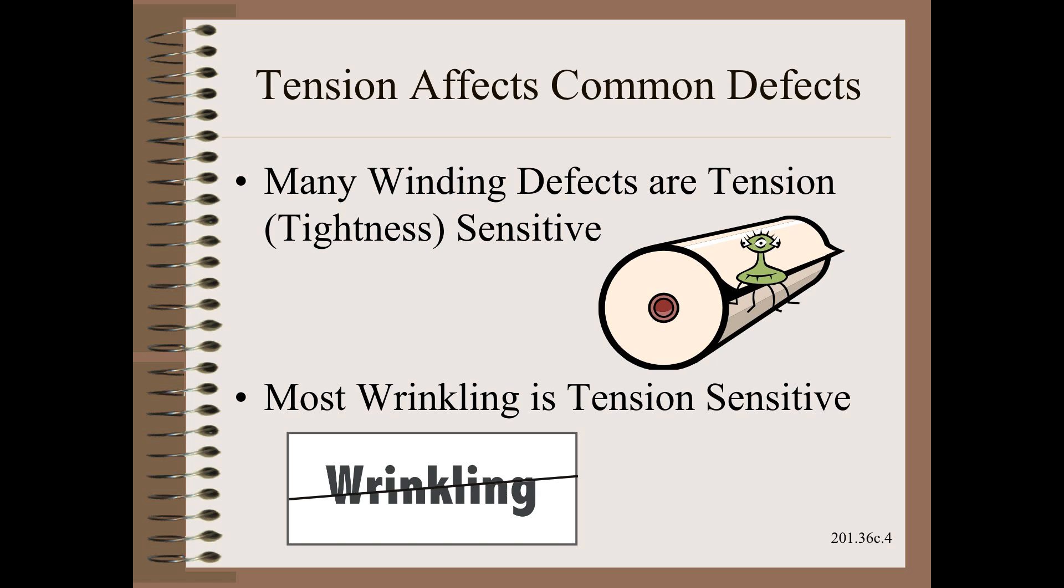Winding and wrinkling defects are so common as to be easily the largest areas of waste, delay, and customer complaints in the web industries. While only some winding defects are tension sensitive, as we learned in Module 20 of Web 101, nearly all wrinkles are tension sensitive, as we learned in Module 9 of Web 101.